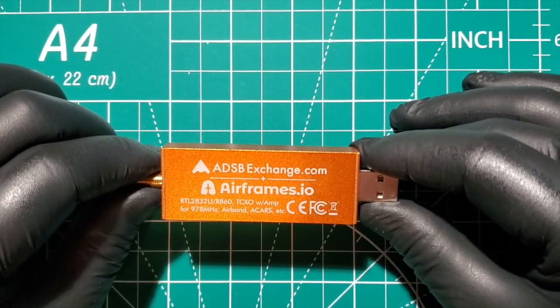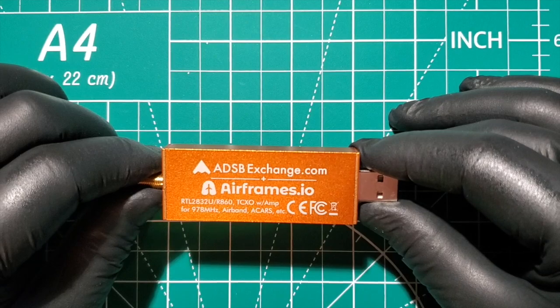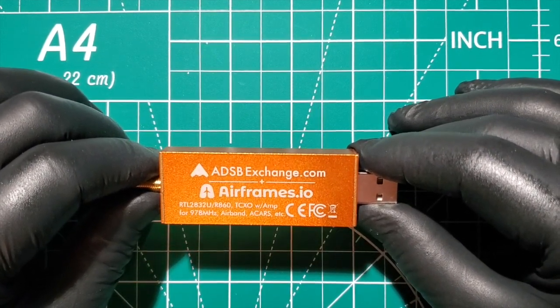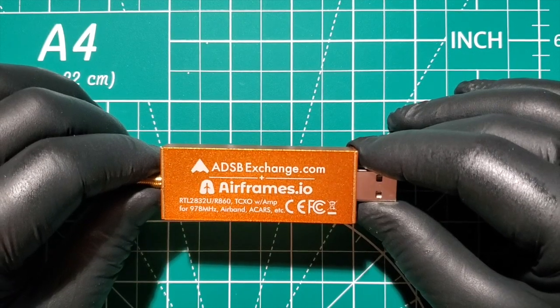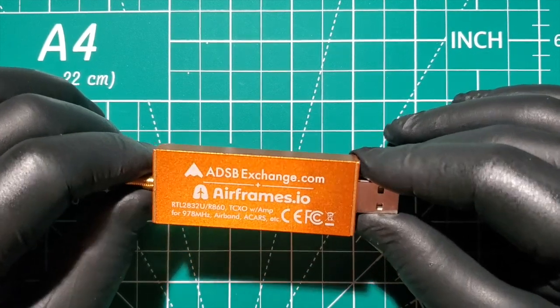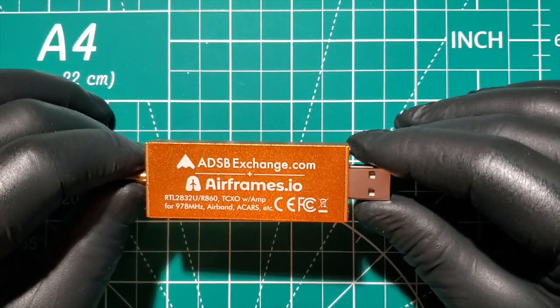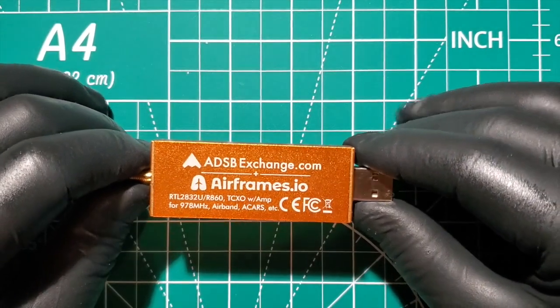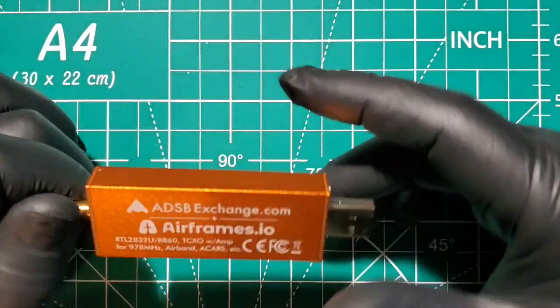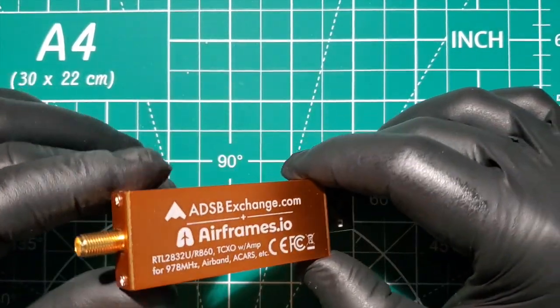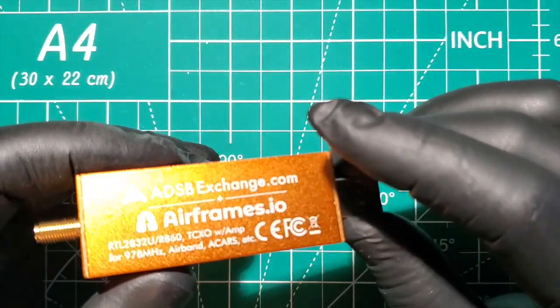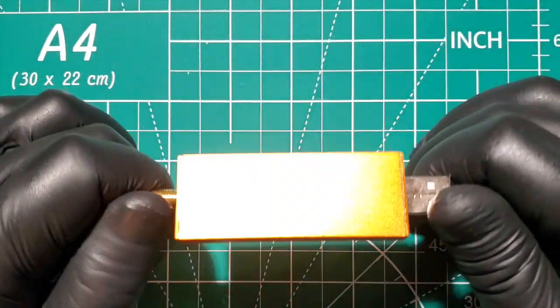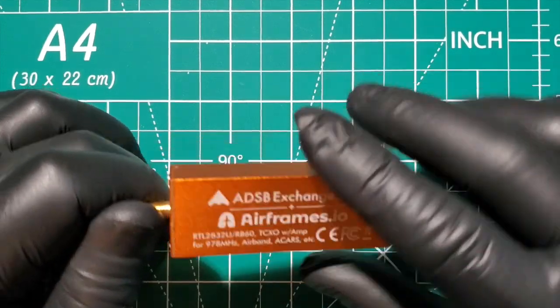You're looking at an ADS-BExchange.com RTL-2832U R860 with an amp for 978 MHz, Airband 8 cars, etc. Now you can pick us up off of Amazon. So we're going to do a what's inside of this and see what it looks like.